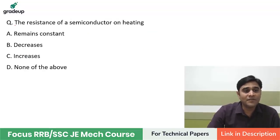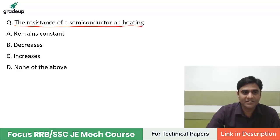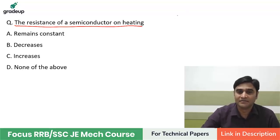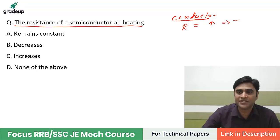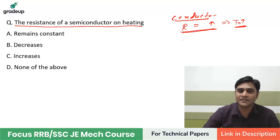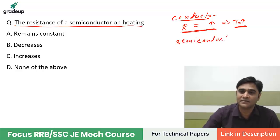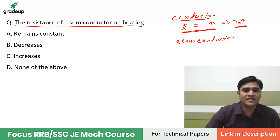The resistance of a semiconductor on heating — does it remain constant, decrease, increase, or none of the above? If you talk about a conductor, the resistance of the conductor increases if temperature increases. But the resistance of a semiconductor decreases on heating. This is very important. So the resistance of a semiconductor decreases on heating.